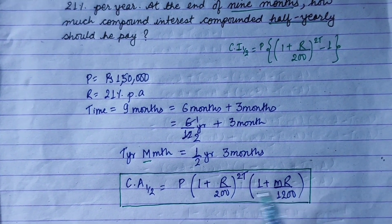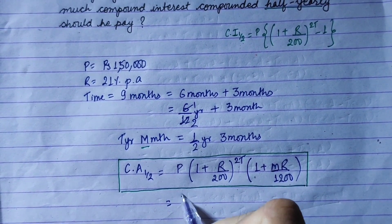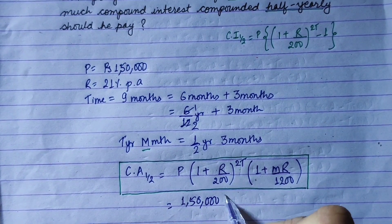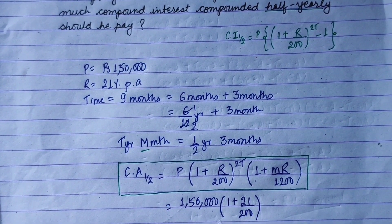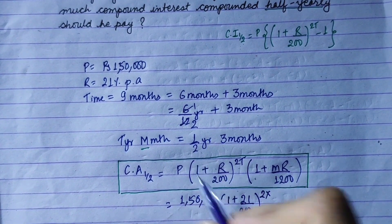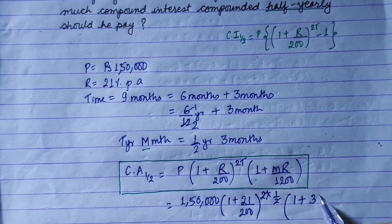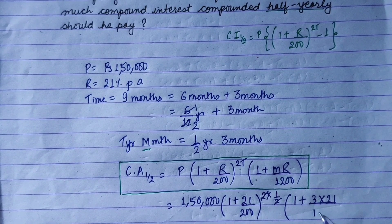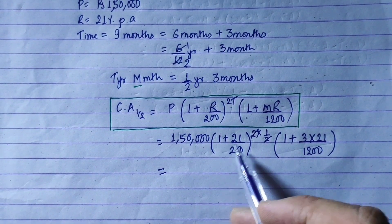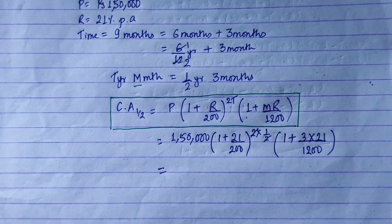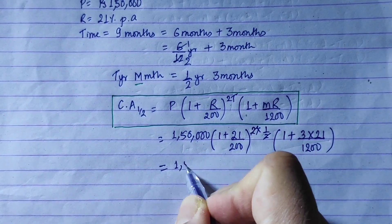Applying the formula: Compound Amount = 1,50,000 × (1 + 21/200)^(2×½) × (1 + 3×21/1200). First bracket: 1 + 21/200 = 1 + 0.105 = 1.105, with power 1 (since 2t = 2×½ = 1). Second bracket: 3×21 = 63, so 63/1200 = 0.0525.